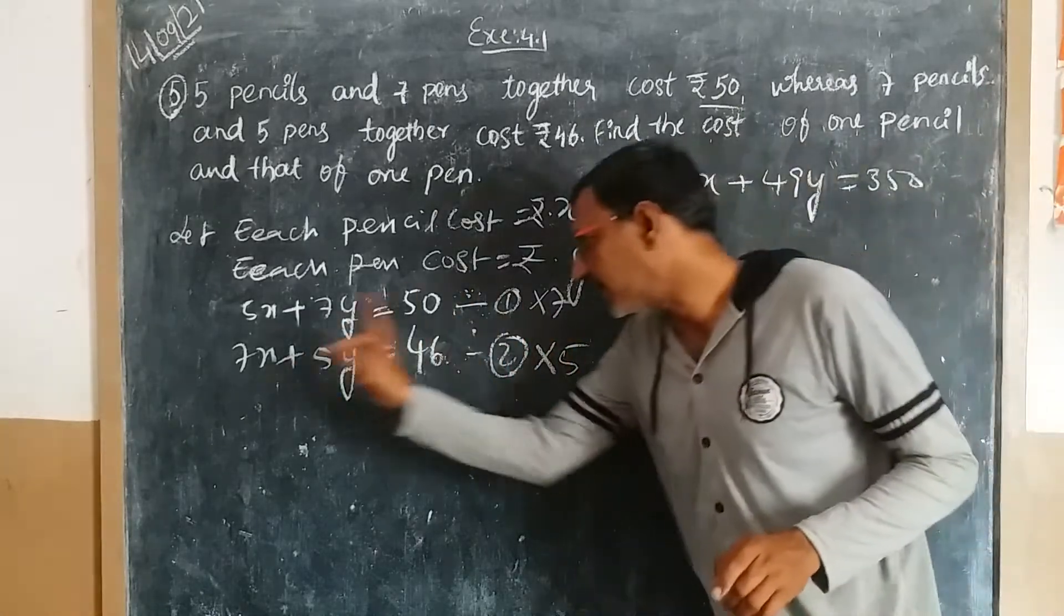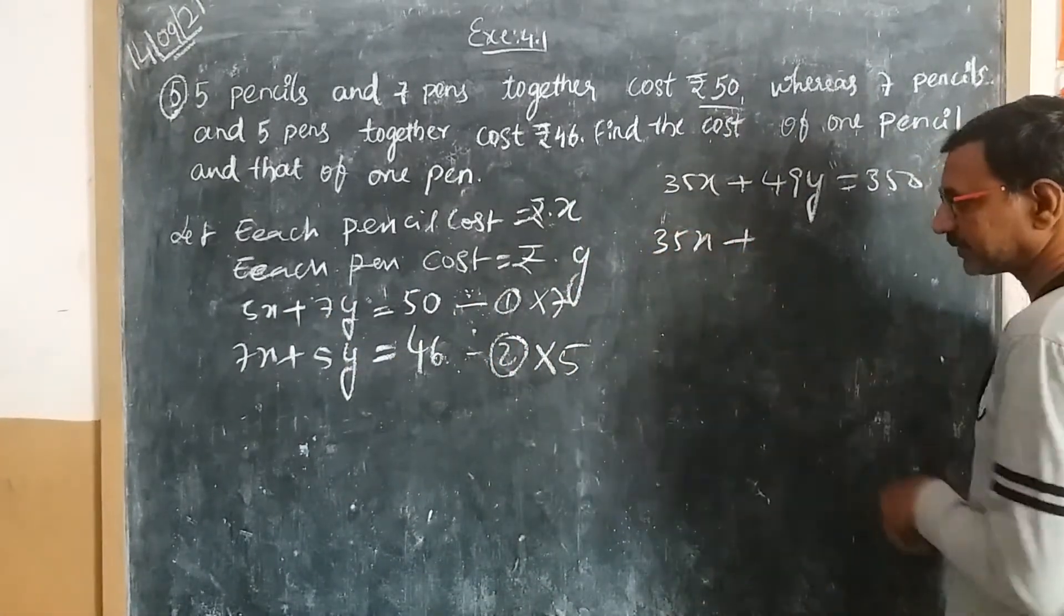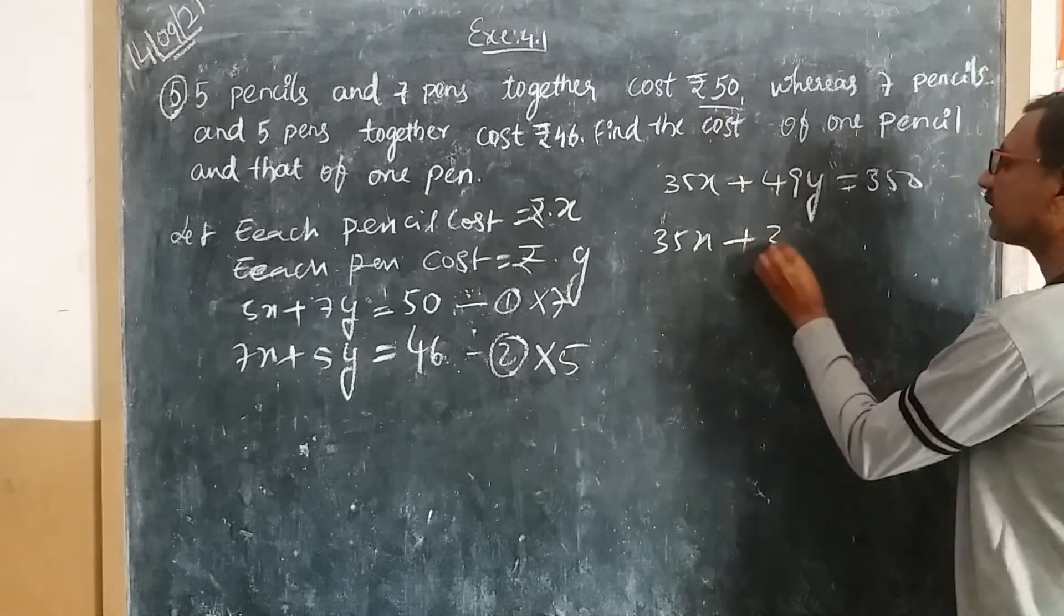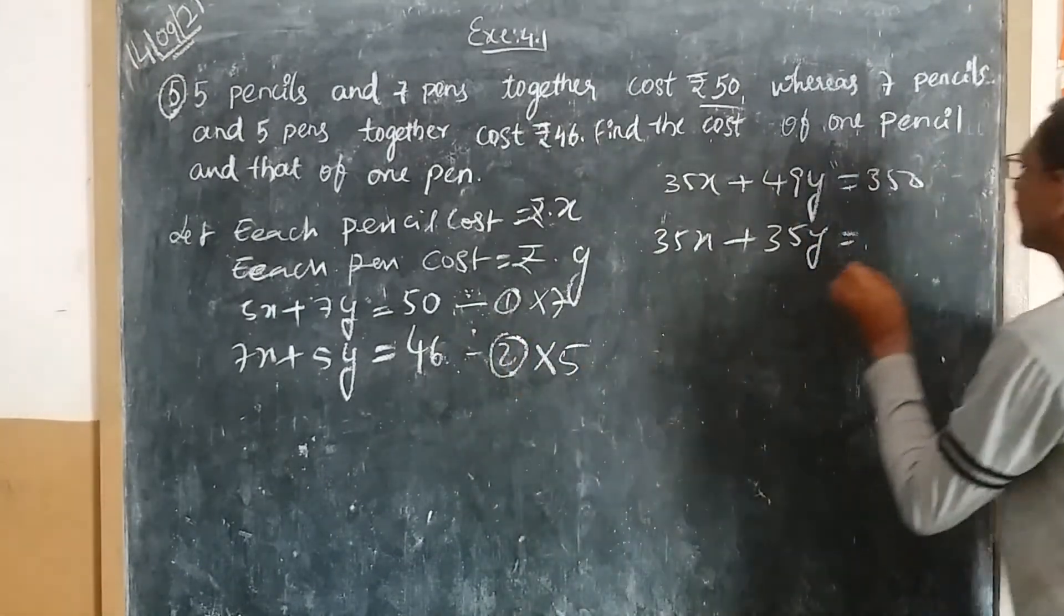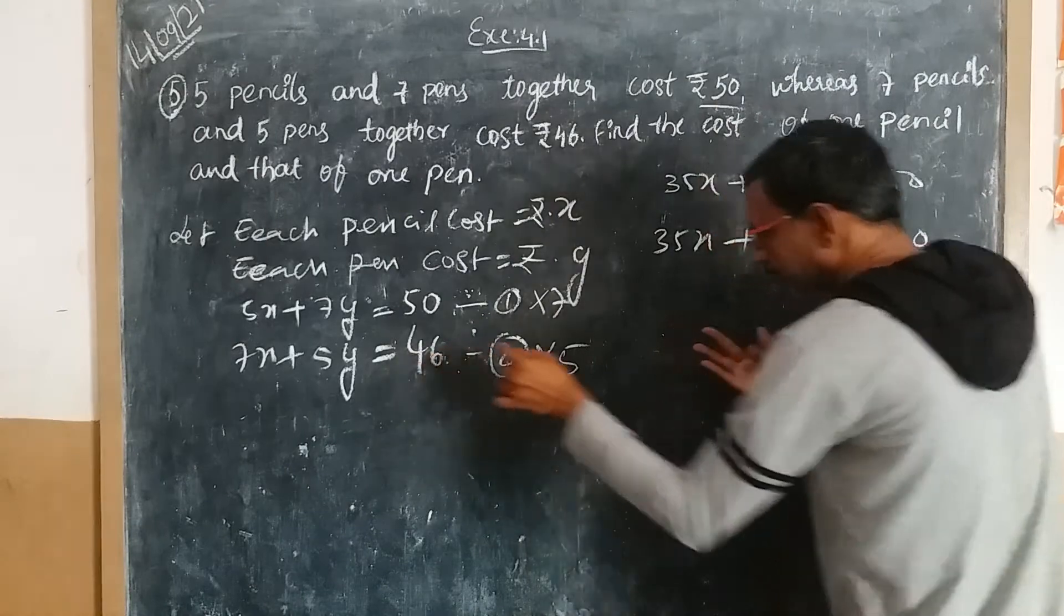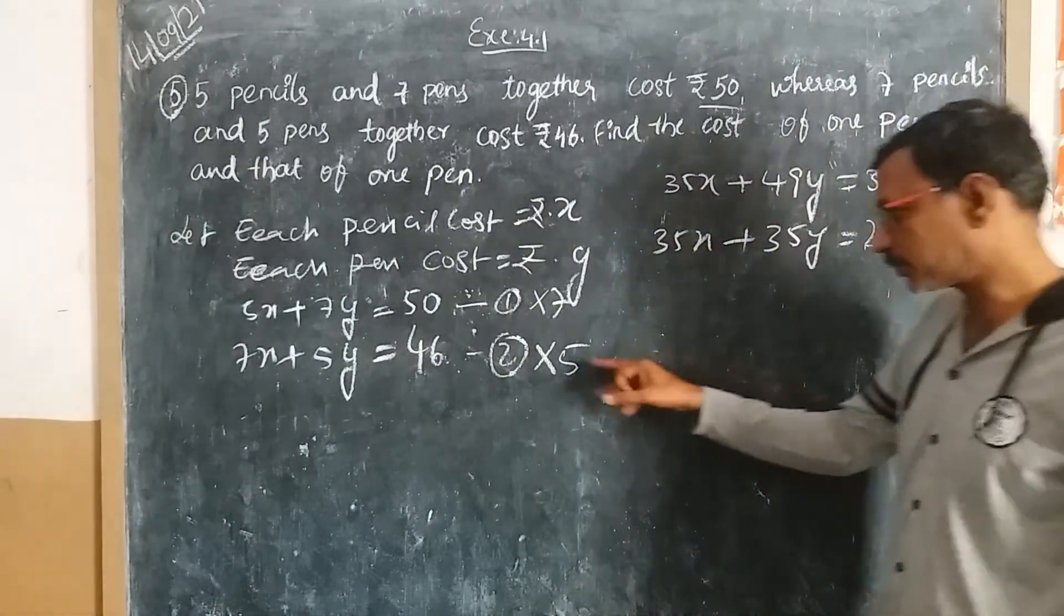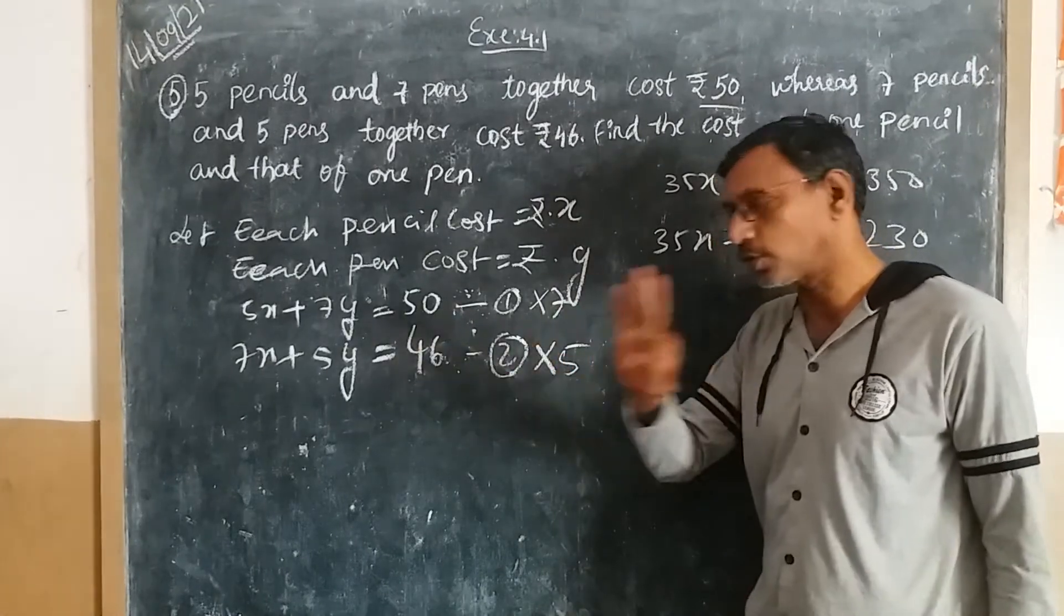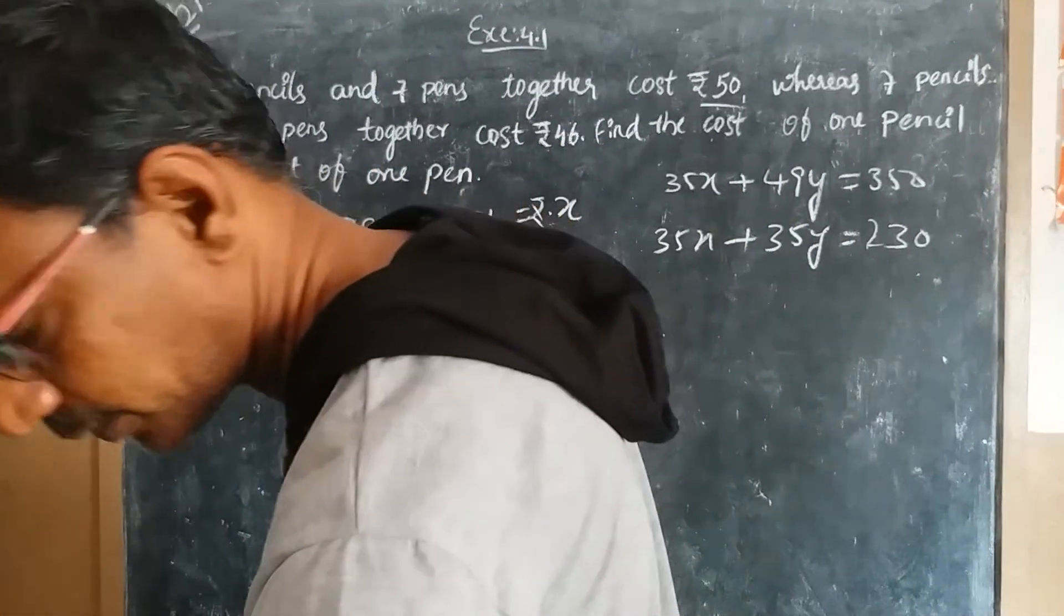Now multiplying the second equation by 5: five times 7x is 35x, plus five times 5y is 25y, equals five times 46, which is 230. So 35x + 25y = 230.